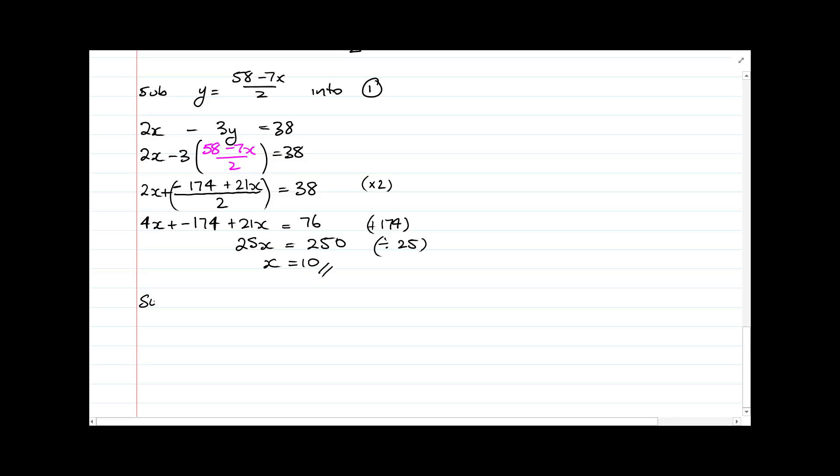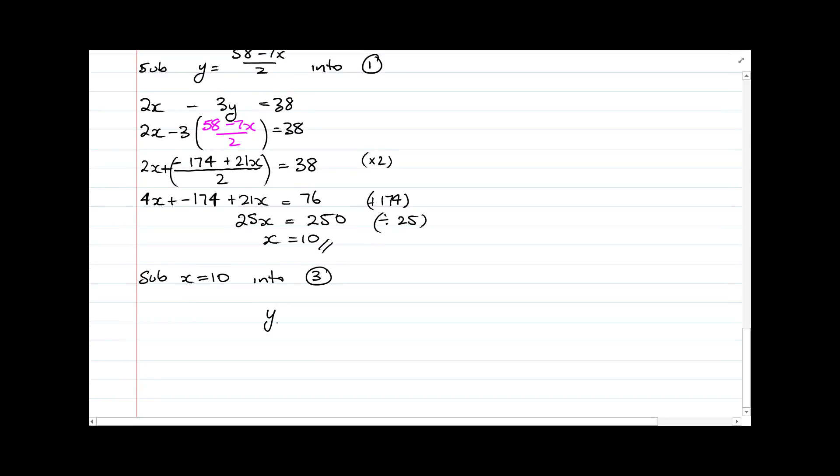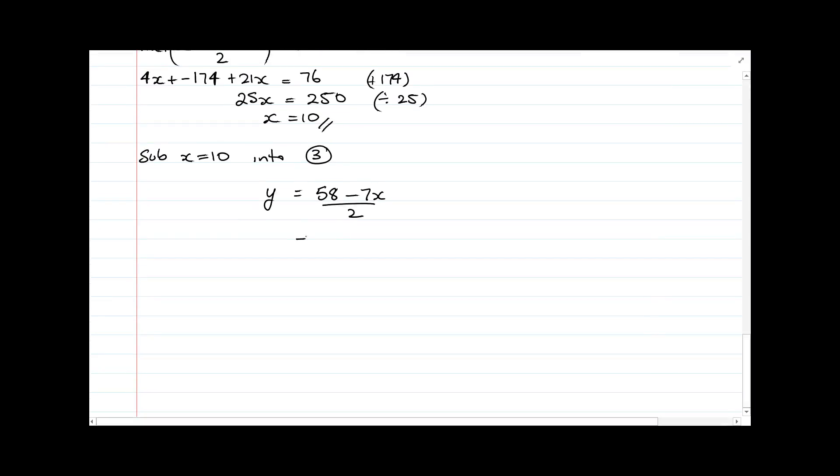Now I'm going to sub x equals 10 into my newly formed function 3. And in 3 I have y is equal to 58 minus 7x over 2. So that will give me y equals 58 minus 7 times 10 over 2, which will equal 58 minus 70 over 2, and that will equal negative 6. So my solutions are x is equal to 10, y is equal to negative 6.